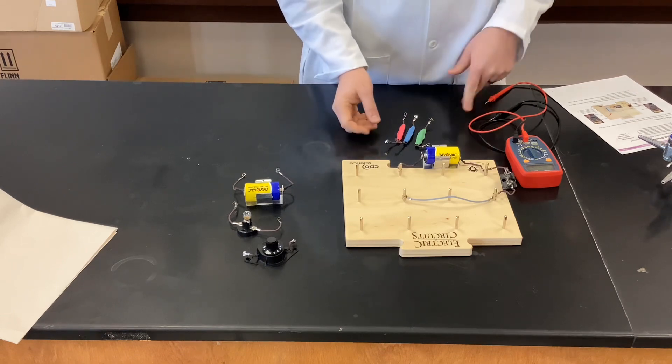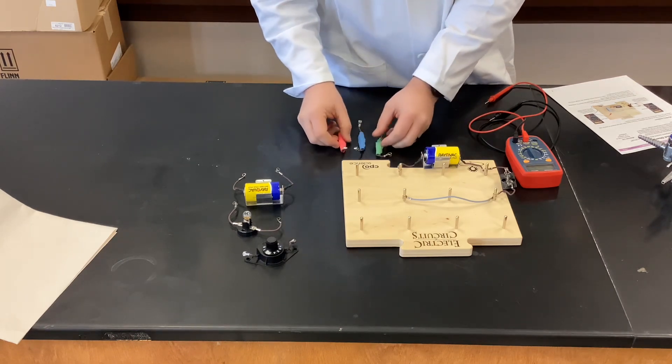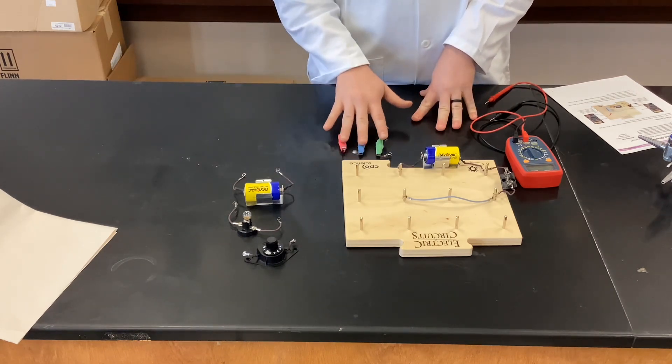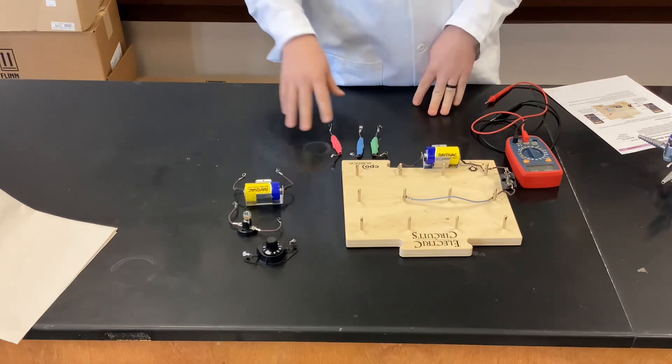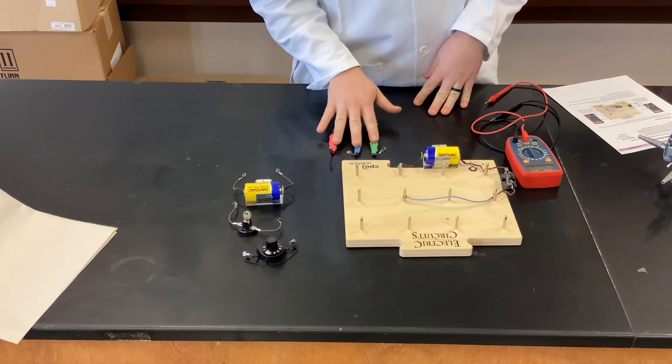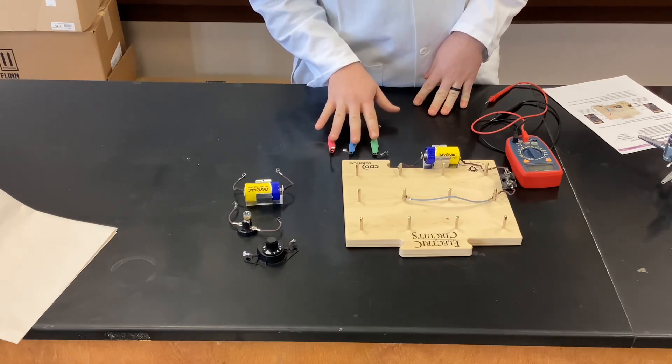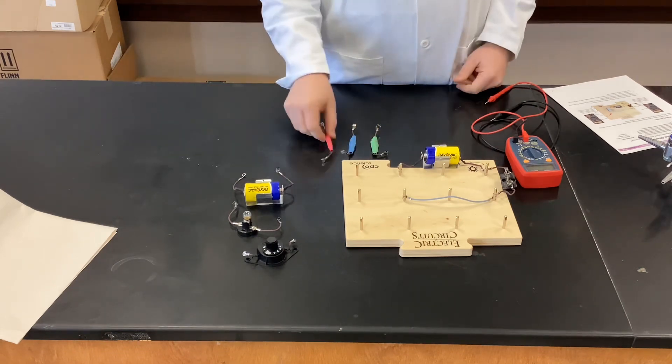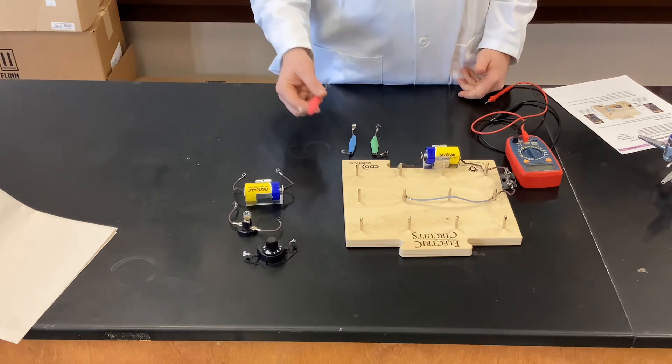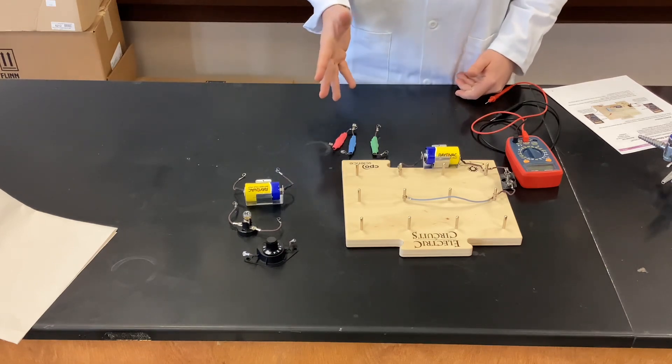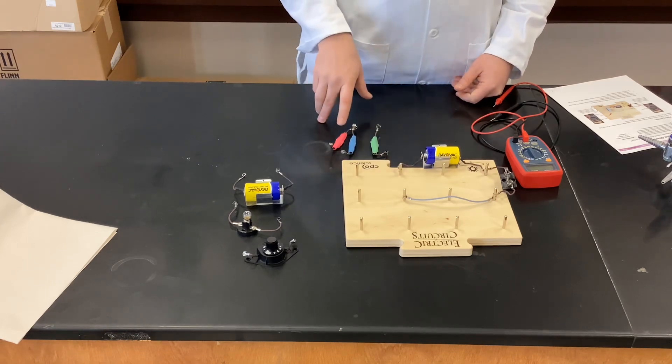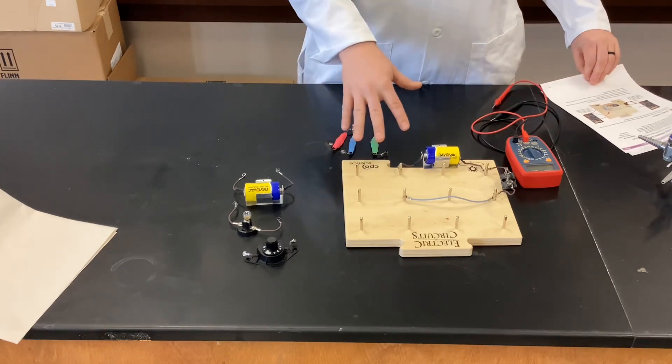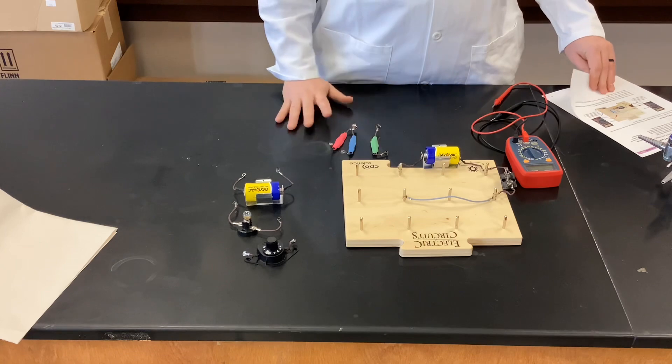It starts off with kind of an investigation. In the electric circuits kit, it comes with these resistors. The resistors are a mystery. It does tell you that one of them is 5 ohms, one is 10 and one is 20, but they're not labeled. So students are going to do an investigation measuring both voltage and current on their circuits in order to figure out which one is which.